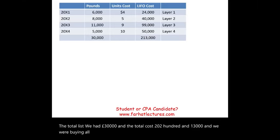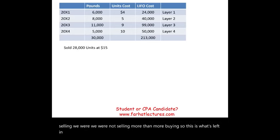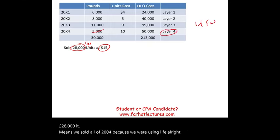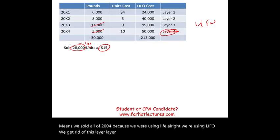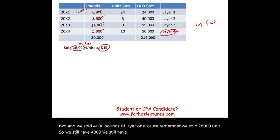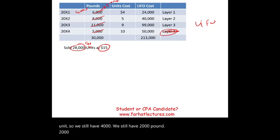We were not selling more than we were buying, so this is what's left in LIFO inventory. Then in 2014, we sold 28,000 pounds at $15. Using LIFO, we first eliminate Layer 4 (2004), then Layer 3, then Layer 2, and then 4,000 pounds from Layer 1. We still have 2,000 pounds remaining from Layer 1, but everything else is sold.